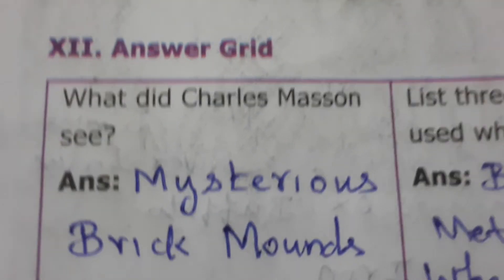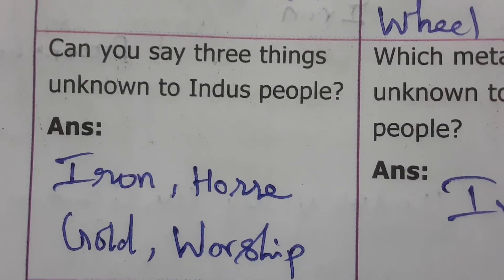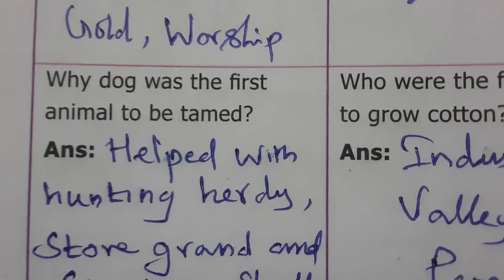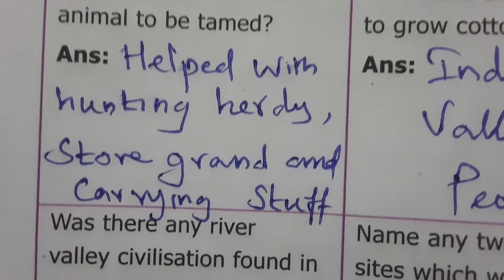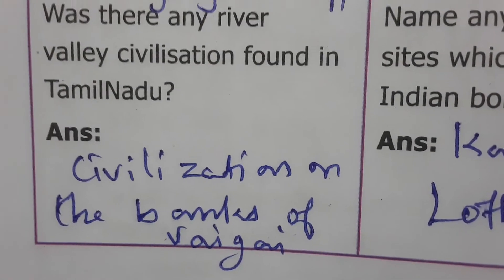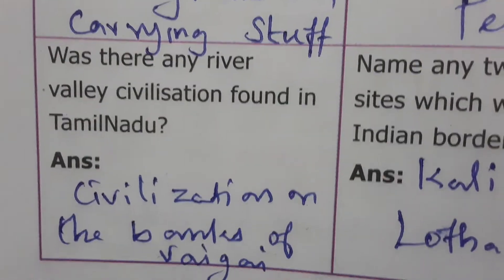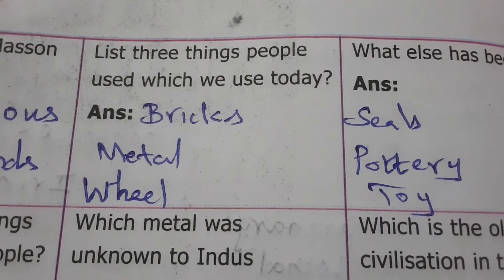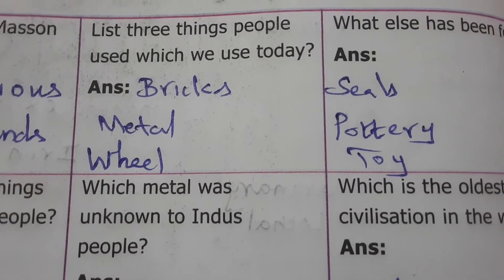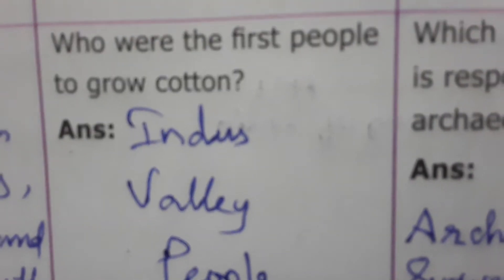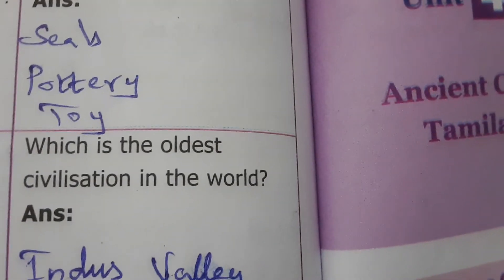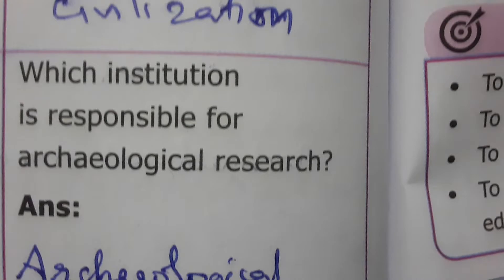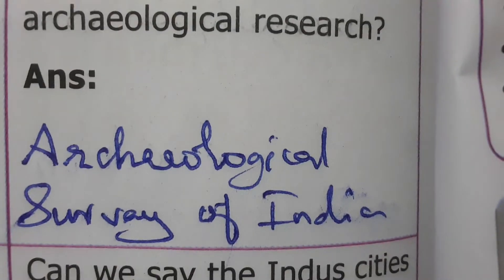Answer grid: What did Charles Masson see? Mysterious brick mounds. Name three things unknown to Indus people: iron, horse, golden warship. Which was the first animal to be tamed? Dog - helped with hunting, herding, storing grain, and carrying stuff. Was there any river valley civilization found in Tamil Nadu? Yes, on the banks of the Vaigai river. Name three things people used then which we use today: bricks, metal, wheel. Who were the first people to grow cotton? Indus Valley people. Name two Harappan sites found in Indian borders: Kalibangan and Lothal. What else was found? Seals, pottery, toys. Which is the oldest civilization in the world? Indus Valley Civilization. Which institution is responsible for archaeological research? Archaeological Survey of India.